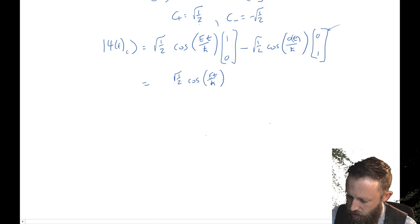For the sine component, this is just going to be √(1/2) times sine of Et over ħ times [1, 0], minus √(1/2) times sine of zero times t over ħ times [0, 1]. In this case, the sine of zero is zero, so this whole term goes to zero. At the end, for the sine part, you just get √(1/2) sine(Et/ħ) on top and zero on the bottom.